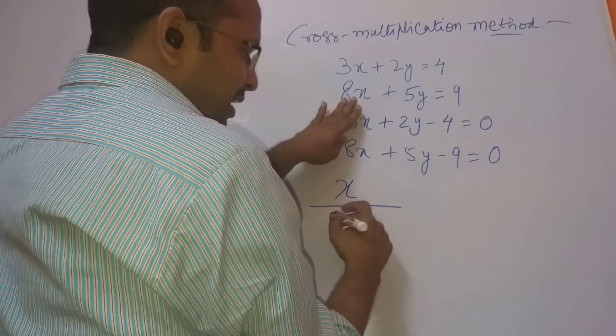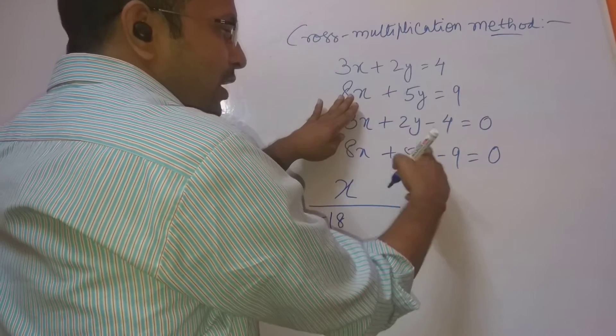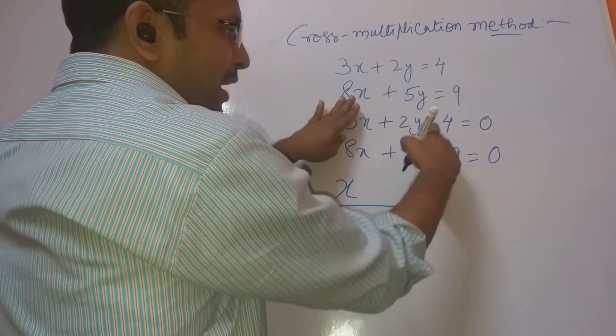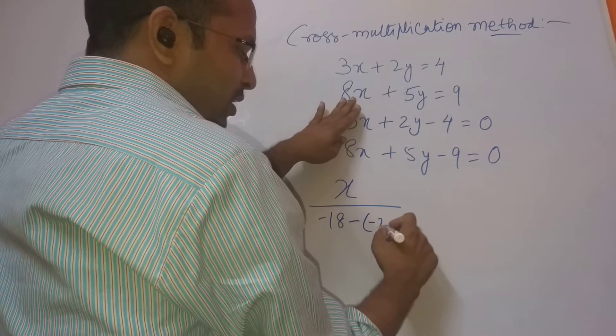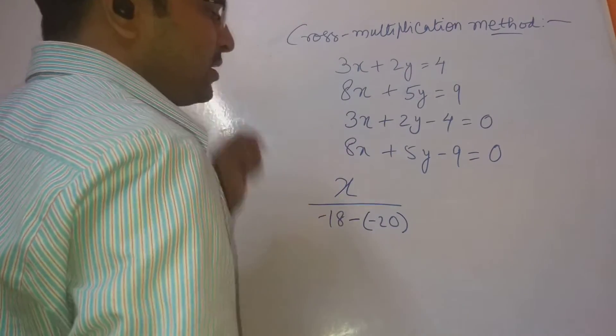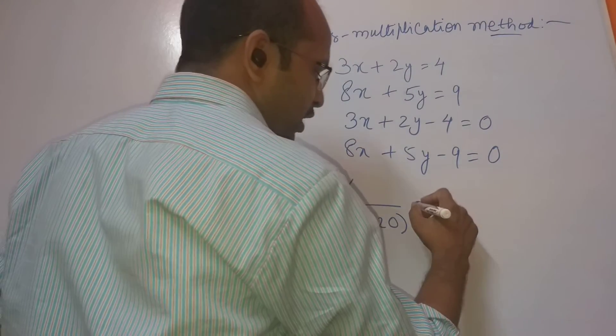2 into minus 9 means minus 18. And then minus 5 into 4 is minus 20. Minus of minus 20. x by this equals to...